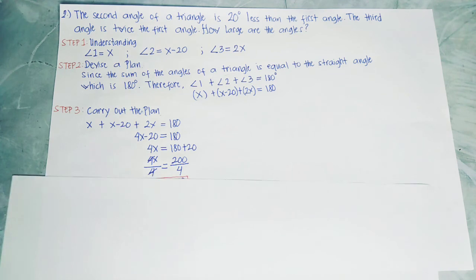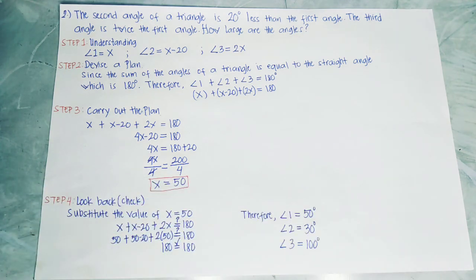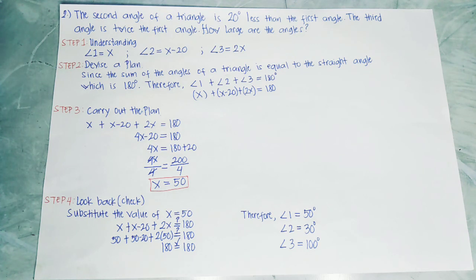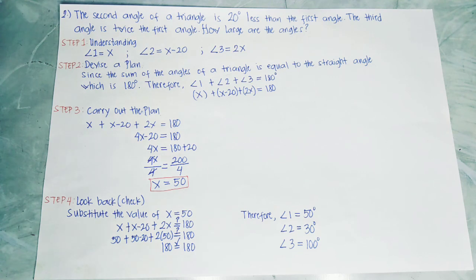The last step, step 4, is look back or check. Substitute the value of x equals 50 into x plus (x minus 20) plus 2x: 50 plus (50 minus 20) plus 2 times 50 equals 180 — it is correct. Therefore, angle 1 is 50 degrees, angle 2 is 30 degrees, and angle 3 equals 100 degrees, for a total of 180 degrees.